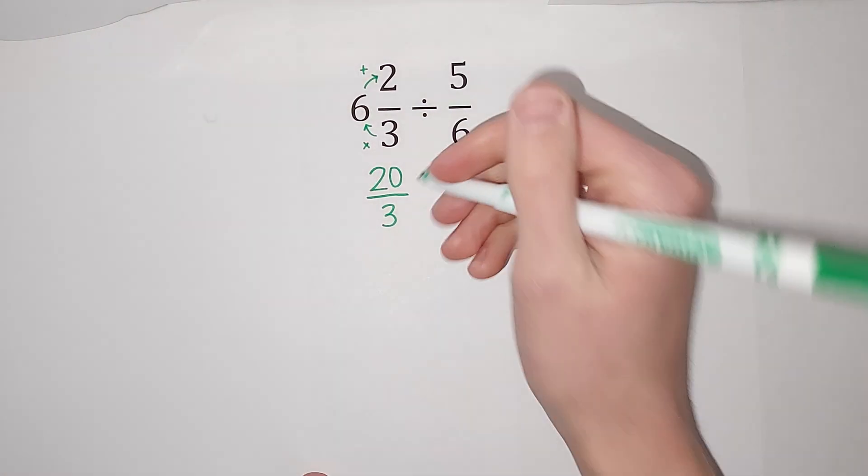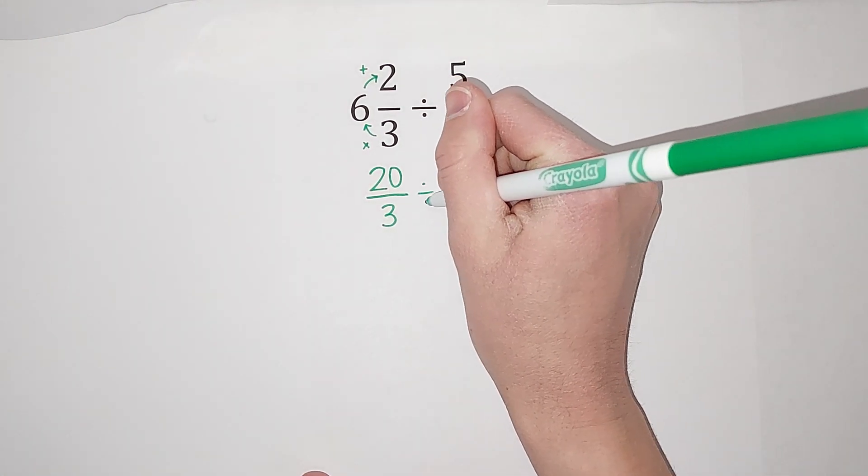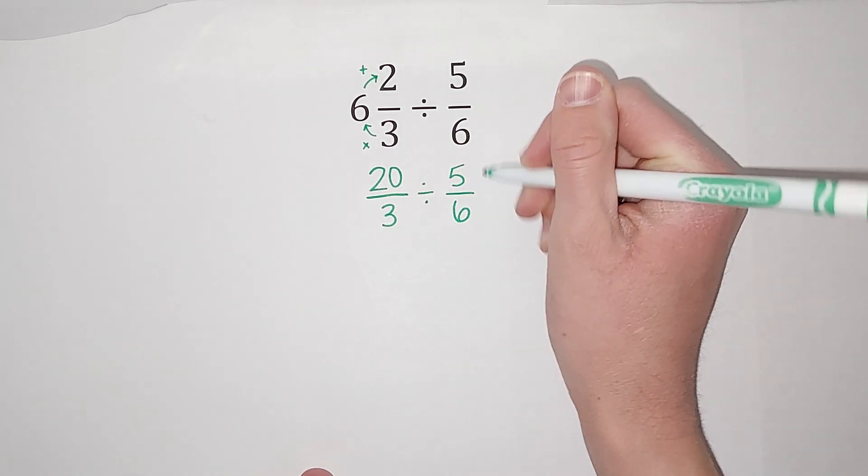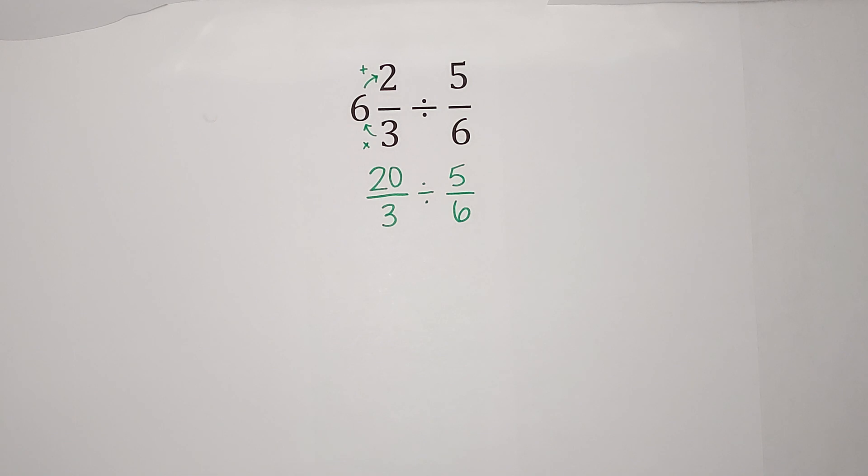This other guy gets to stay the same. So now we have 20/3 divided by 5/6. Guys, sixths is really hard to say. Just don't make fun of me as I try to say it.